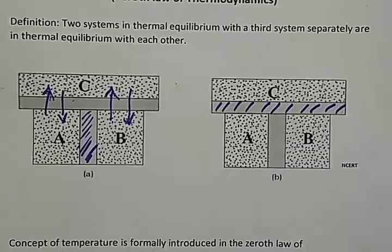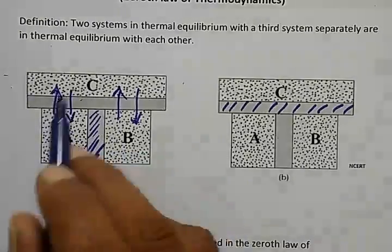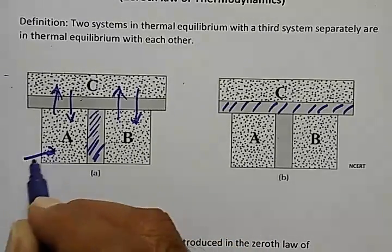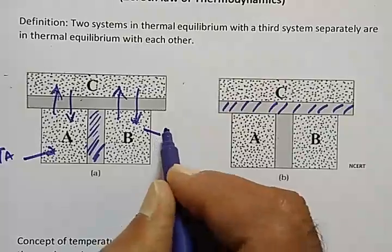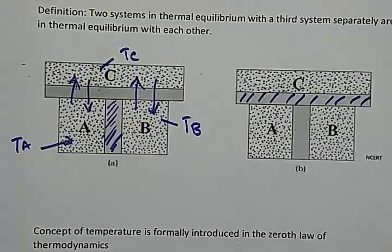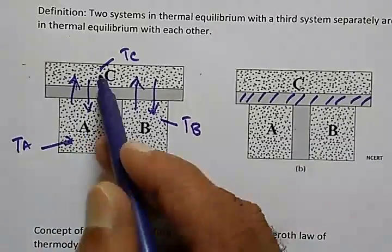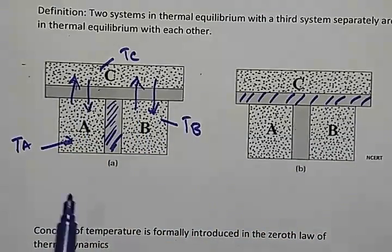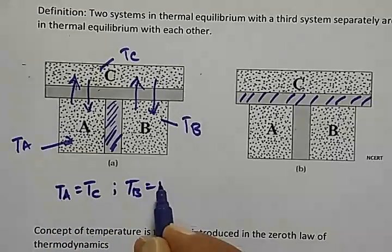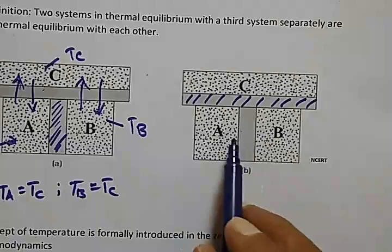Let us put this mathematically. We measure the temperature after allowing the systems to stabilize. The temperature of A is Ta, the temperature of B is Tb, and the temperature of C is Tc. Since energy flow happened between A and C, and B and C, they reached thermal equilibrium: Ta equals Tc, and Tb equals Tc.